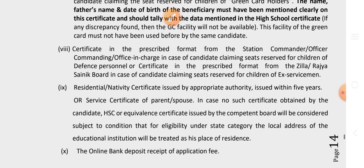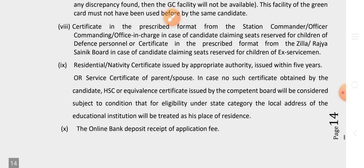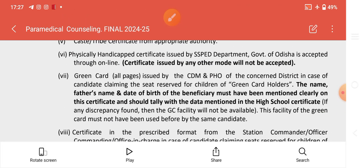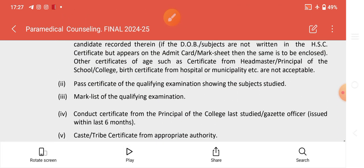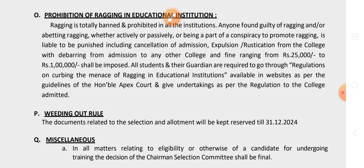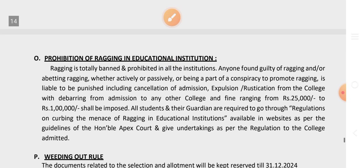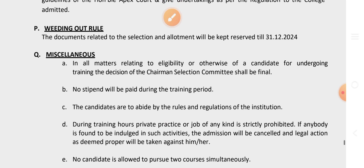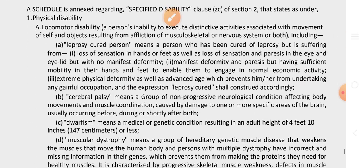HSC from a competent board will be considered for state category eligibility, with the local address of the educational institute treated as the place of residence. Applications must be submitted through the online portal. Candidates must apply for the relevant course and submit qualification-related documents, including for nursing and disability categories.